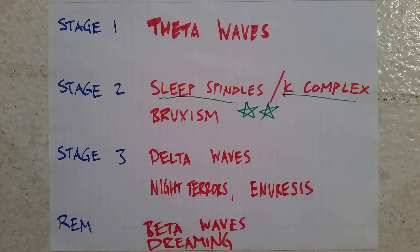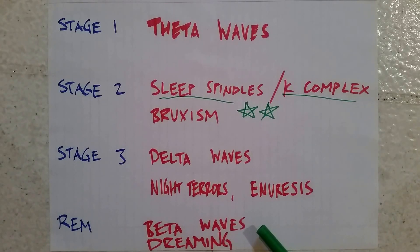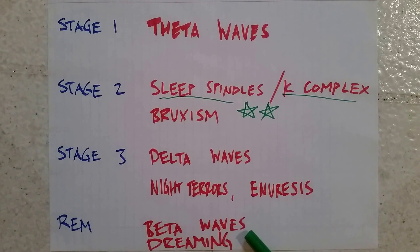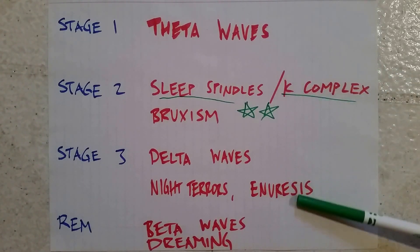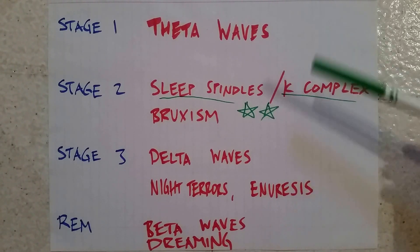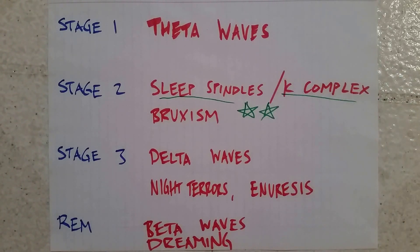Probably the most popular stage of sleep is the REM stage — rapid eye movement — which involves beta waves. This is when we dream. And again, you're going to roll through all these stages multiple times during a full night's sleep. That's a brief introduction to the sleep stages.